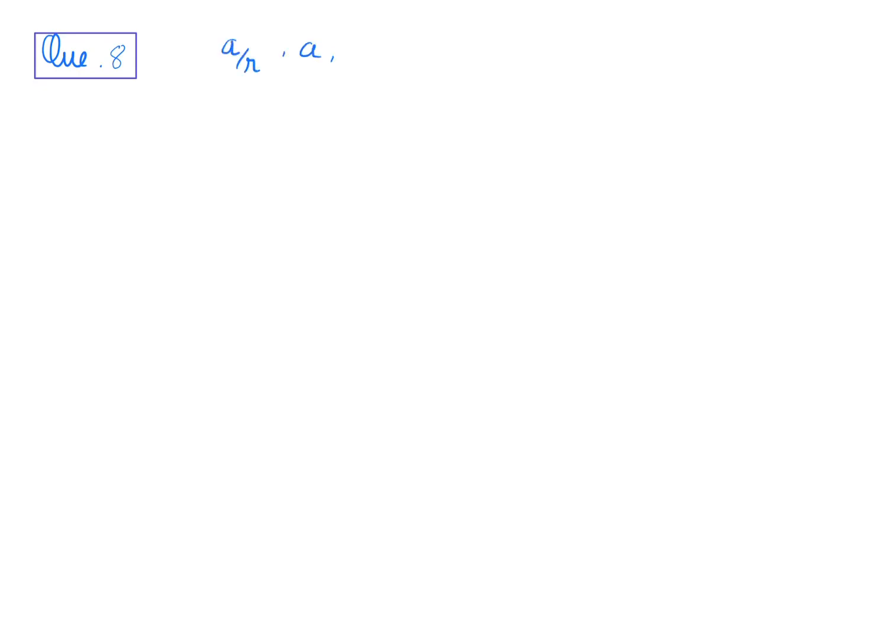The sum and product of three consecutive terms of a GP are 6 and minus 64 respectively. Find the three terms of the GP. Whenever you are given both addition and product of three terms, you must assume the three terms as a/r, a, and ar. So let's assume the consecutive three terms are a/r, a, and ar.